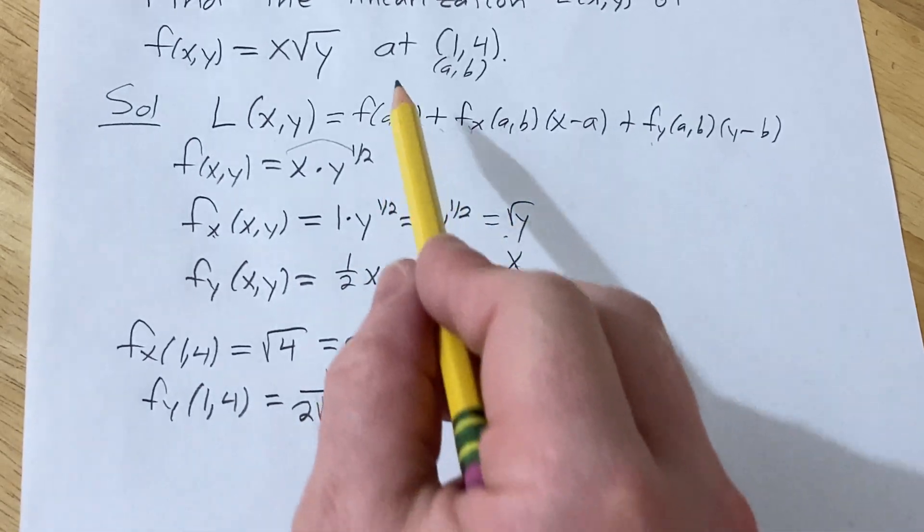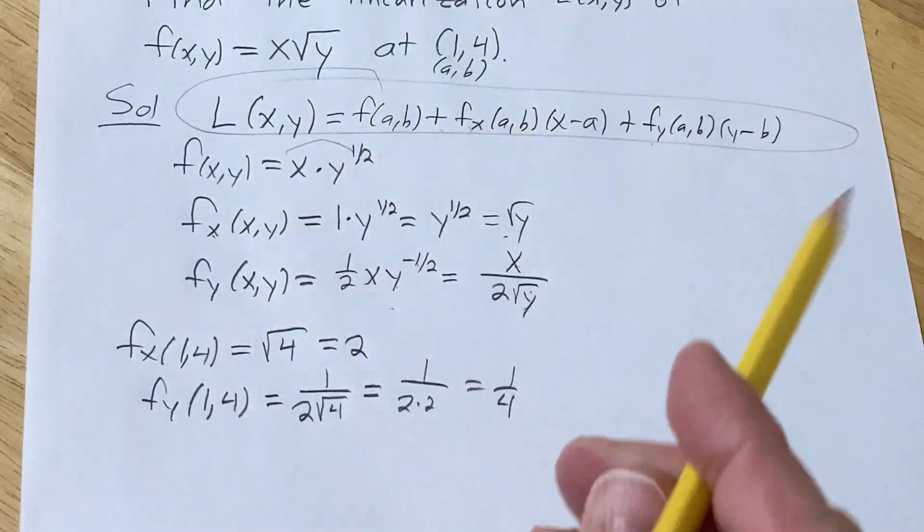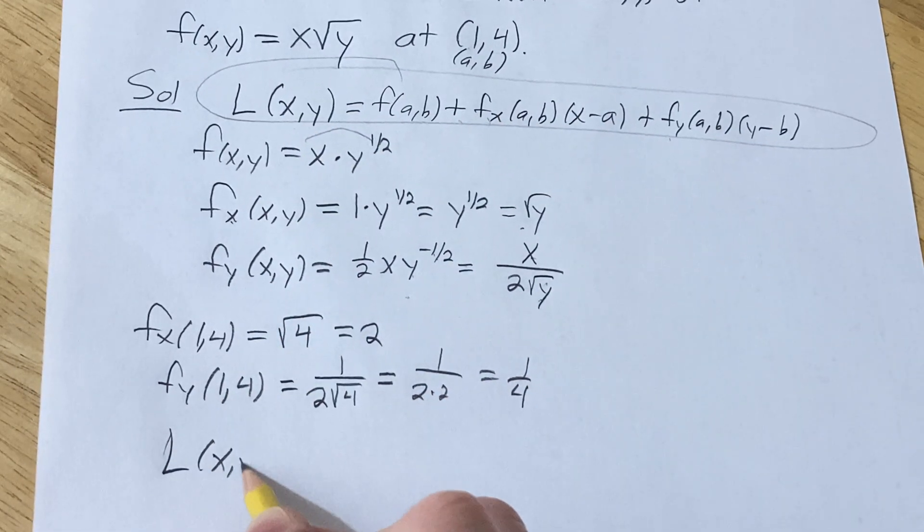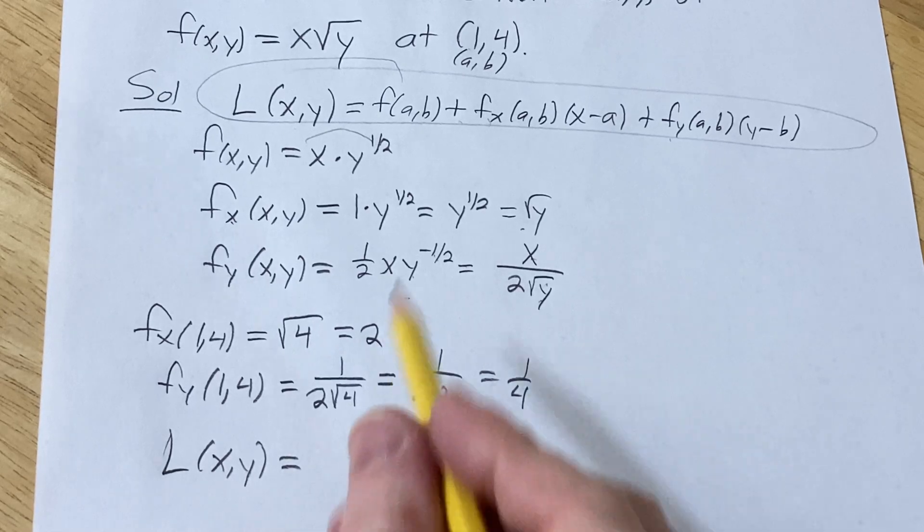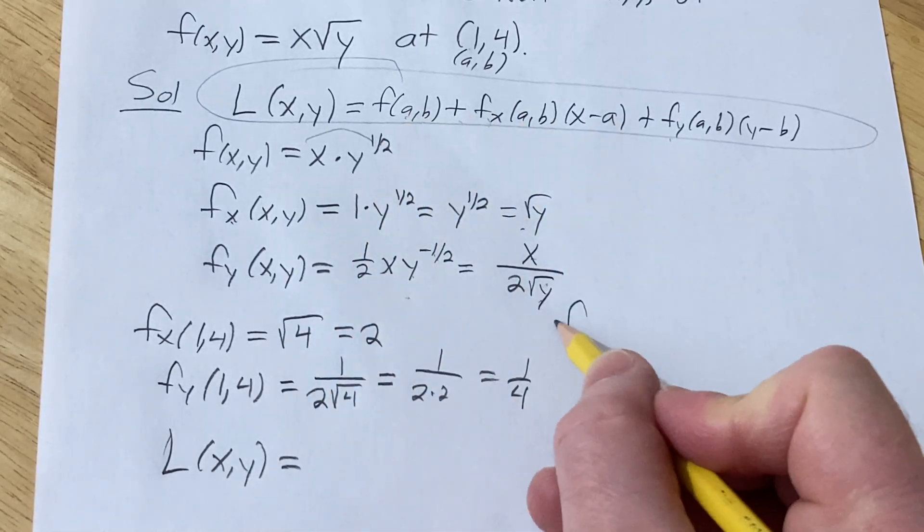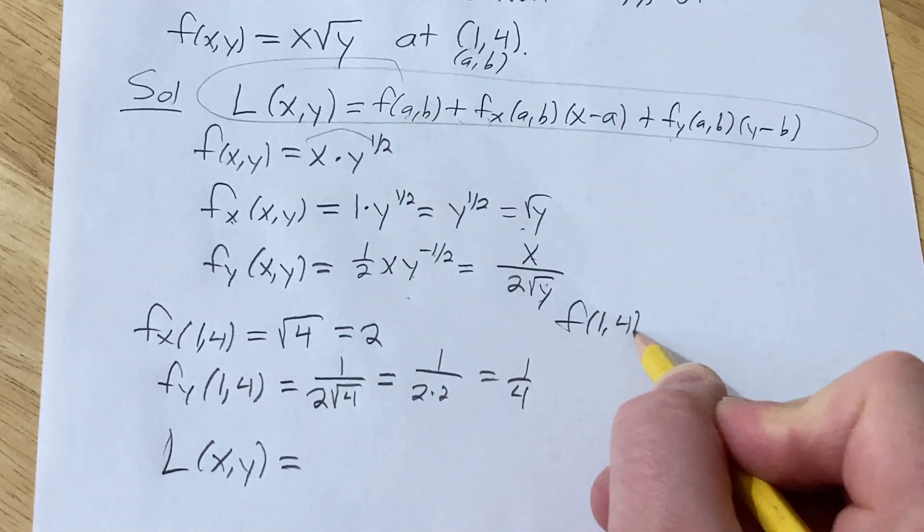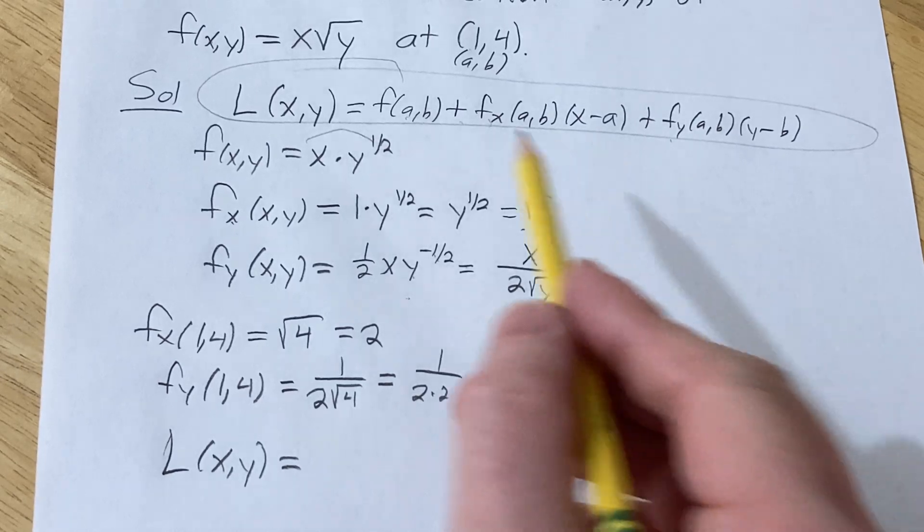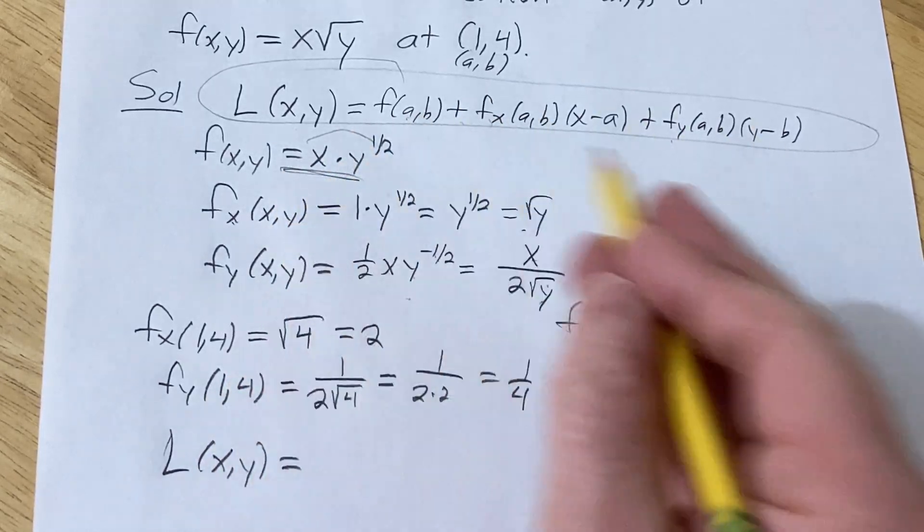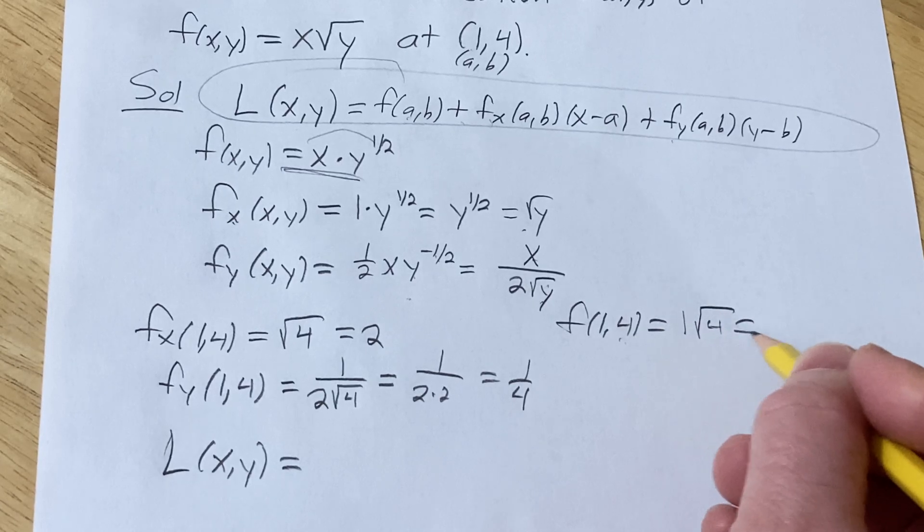We can plug everything into our formula here for the linearization. So L(x,y) is equal to... Oh, I forgot to do this one. So let me just do that one. f(1,4). Now we're just looking at f for this one, right? So x is 1. And then we have the square root of 4. So just 2.